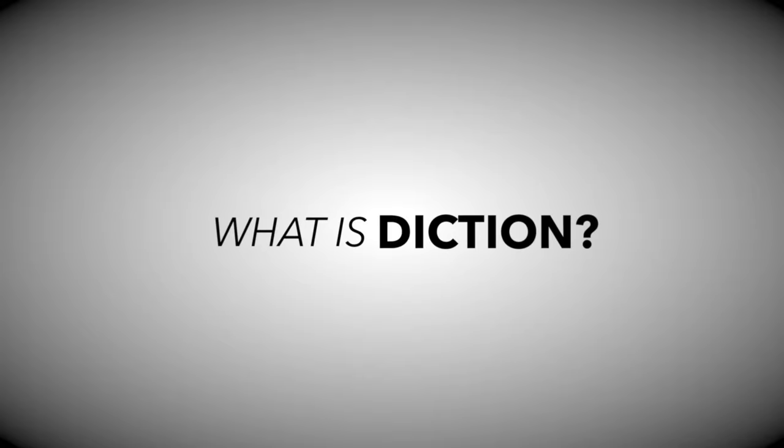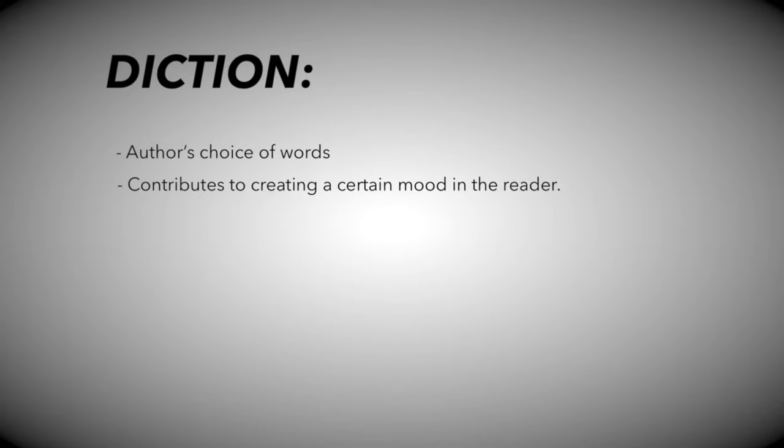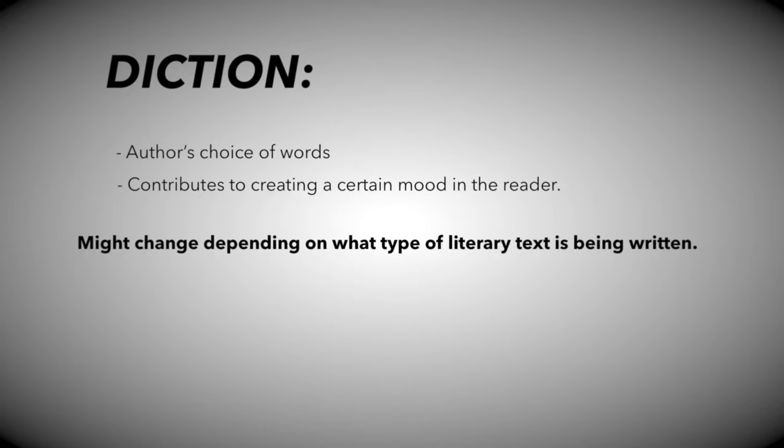What is diction? Diction is the author's choice of words or phrases. It helps create a certain mood in the audience. The author's diction may change depending on what type of literary text you are reading.